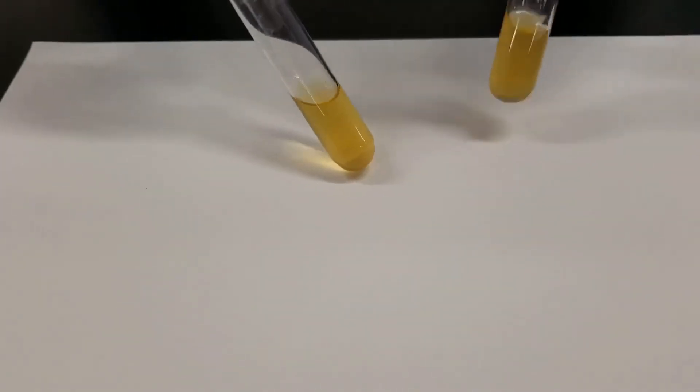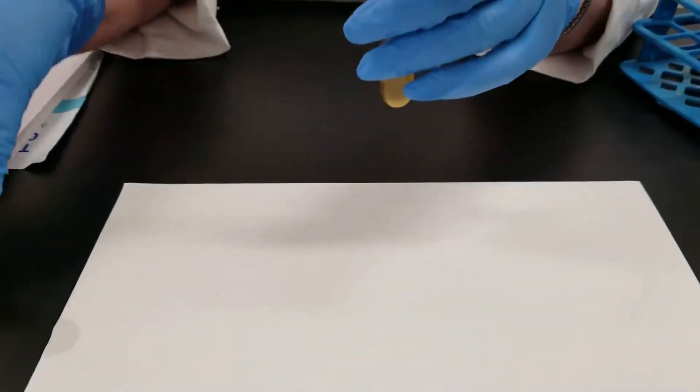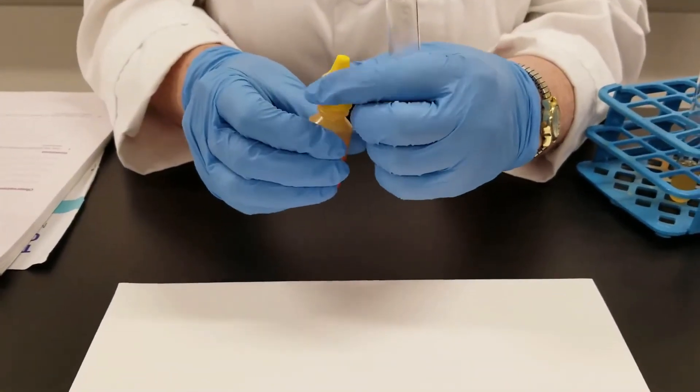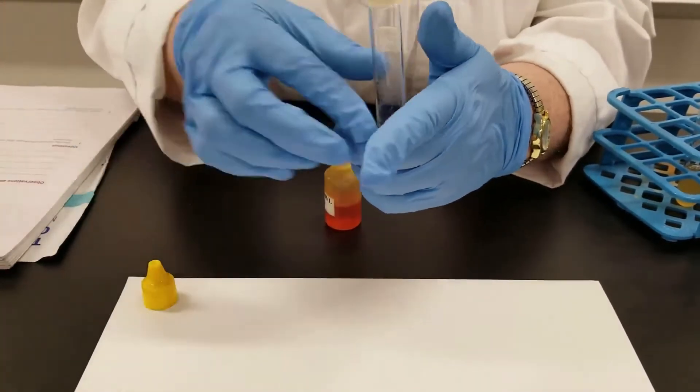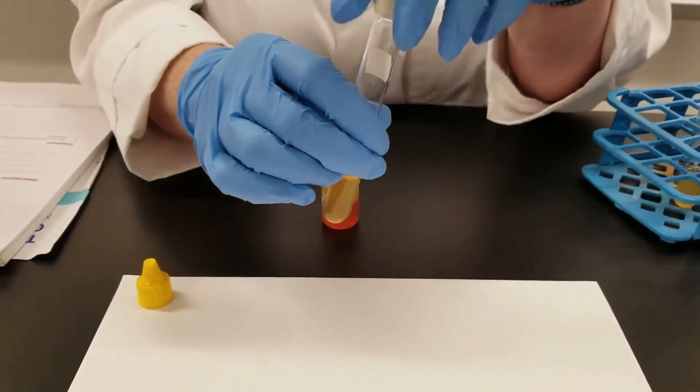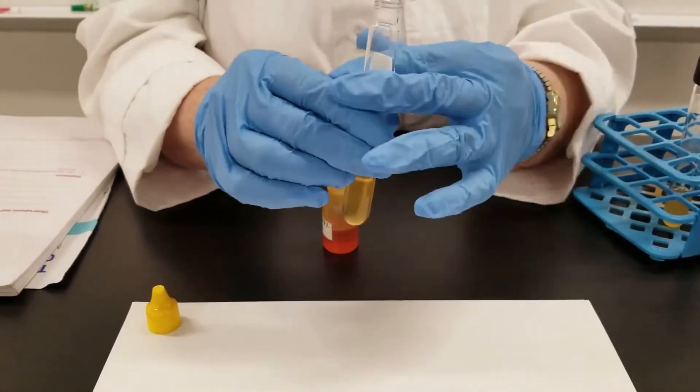So we have two different tubes here. To each one I need to add five drops of the methyl red. The first tube I have is the Proteus vulgaris organism. We had nice growth after 24 hours, so these were inoculated yesterday.